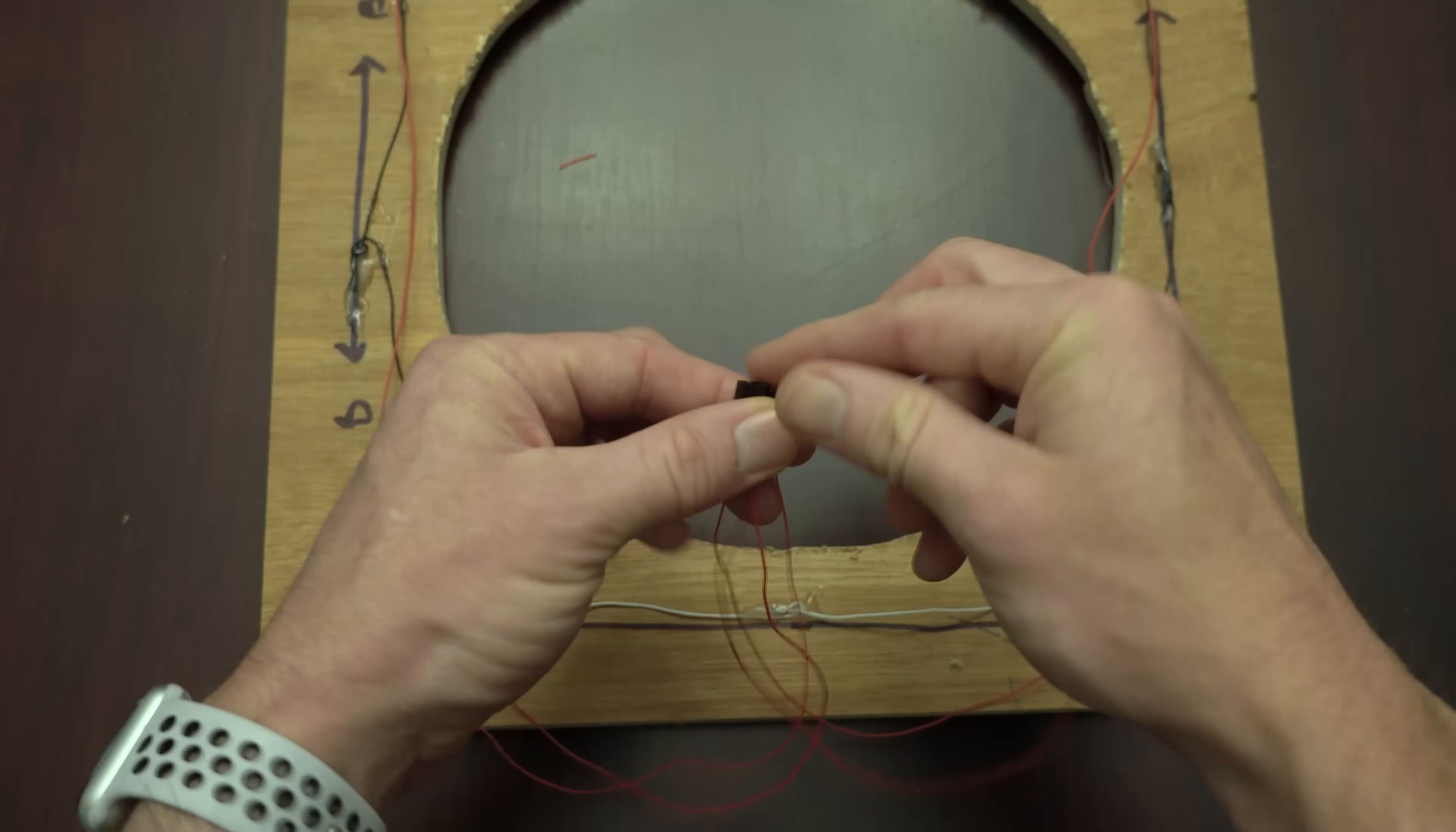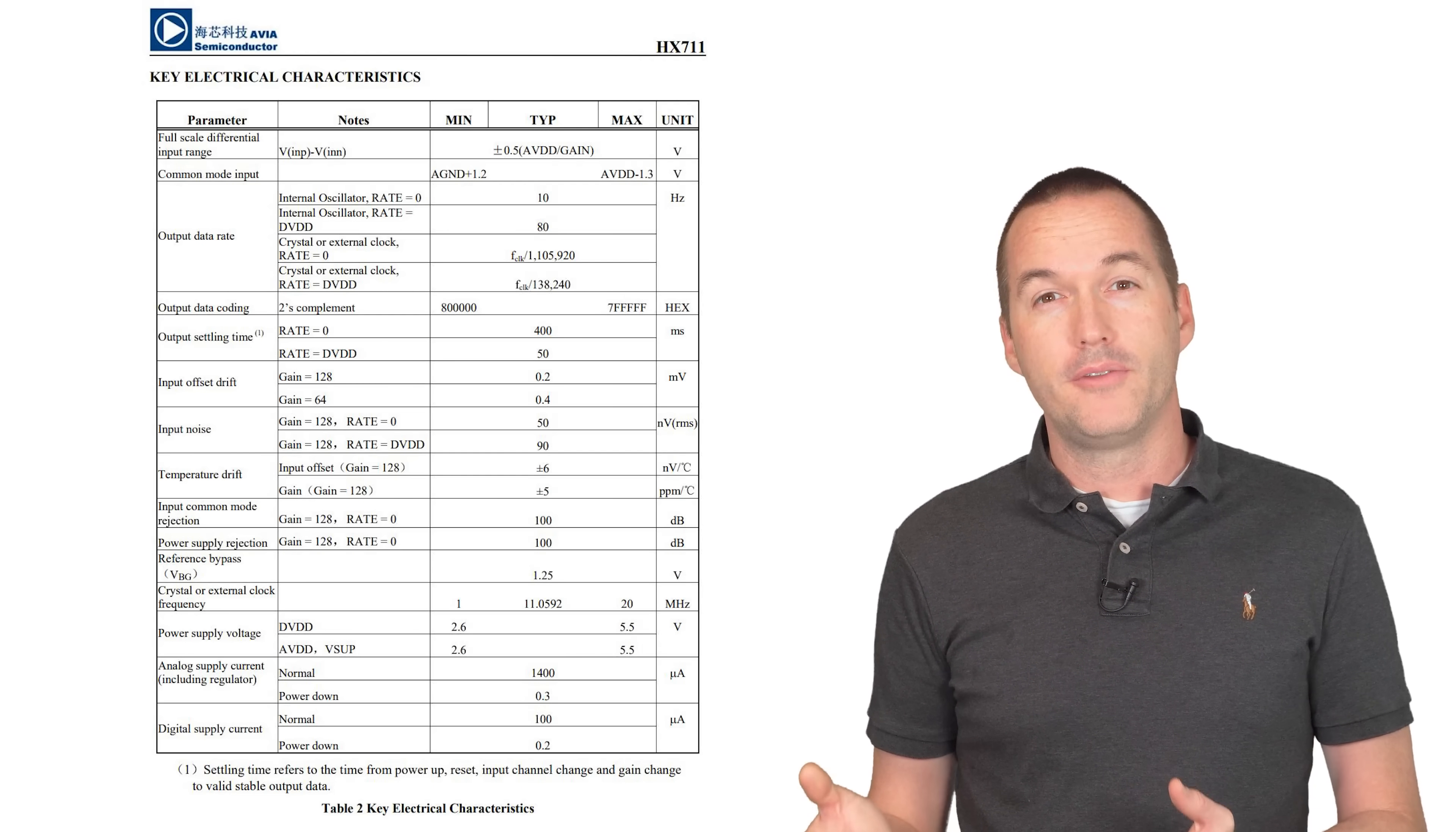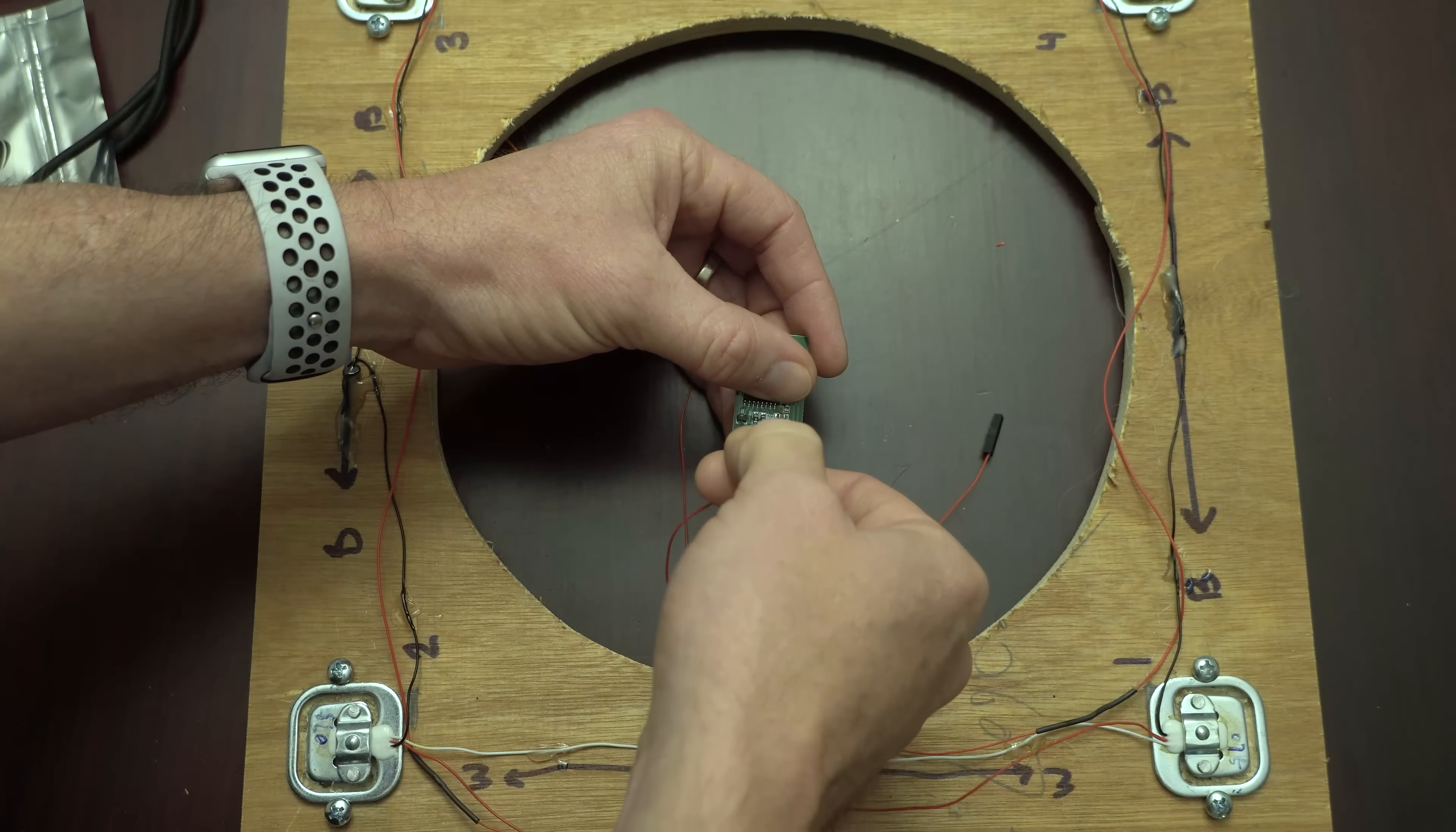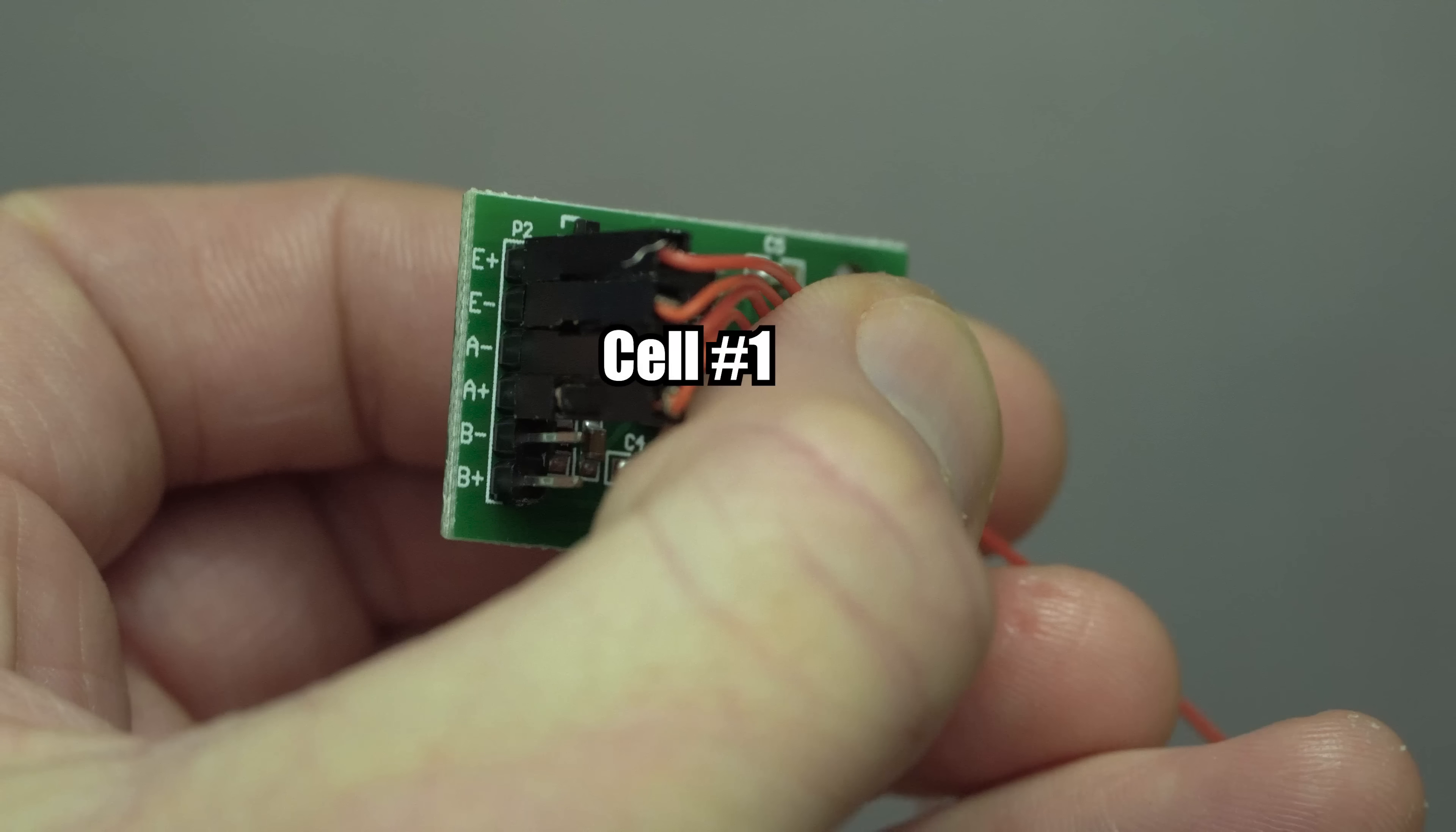At this point I broke out my dupont crimpers and attached some female headers to my 4 remaining red wires, and then I connected them to my HX711 amplifier. The amplifier is necessary because the difference in resistance in the load cells is actually going to be really small, so we need a purpose built device with a better analog voltage resolution than you'd find in a normal microcontroller. We also want to keep the HX711 as close as possible to our load cells so we don't introduce noise or resistance into the circuit with our connecting wires. On the HX711 you'll connect the red wire of cell 1 to the A- terminal, cell 2 to the E- terminal, cell 3 to the A- terminal, cell 4 to the E- terminal.